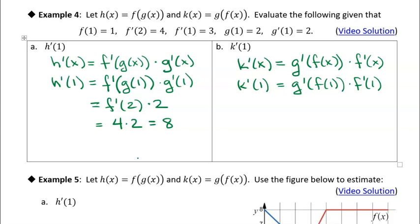We're just going to look up those values. g'(f(1)), f of 1 is 1, that's nice. f of 1 is 1, and then we're going to multiply that times f'(1). f'(1) is 3. Now g'(1) is 2 times 3 gives us 6.